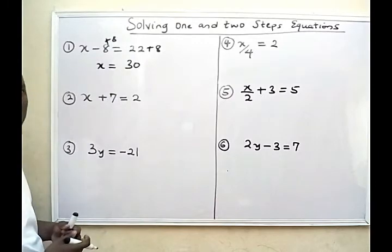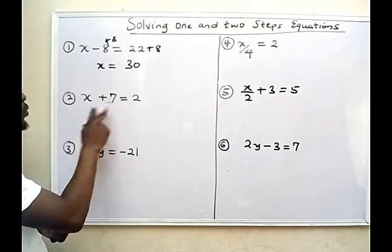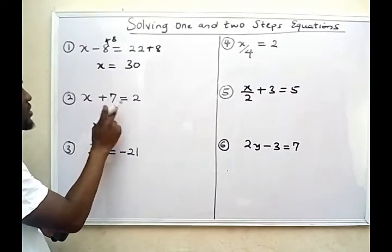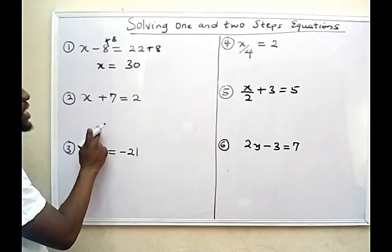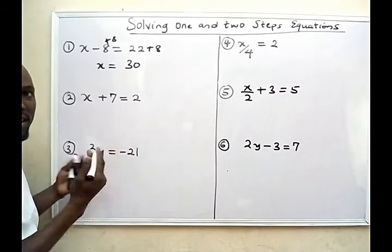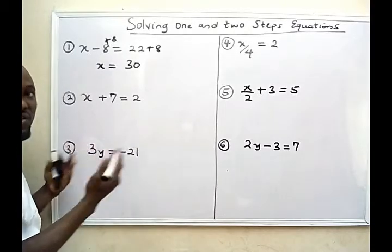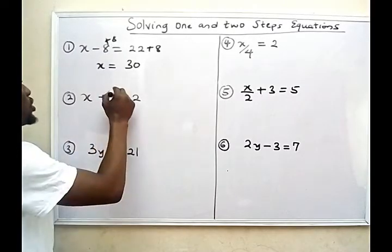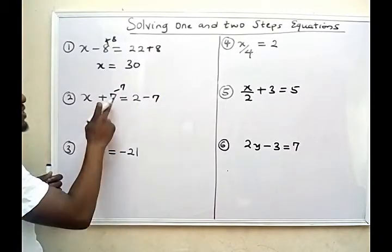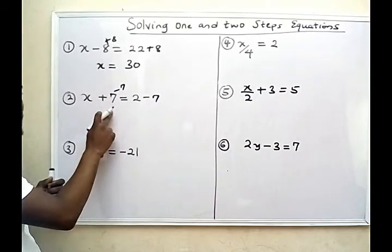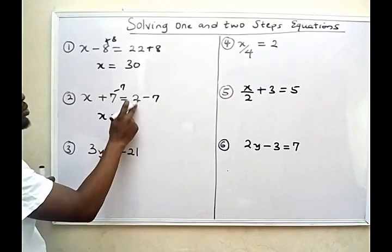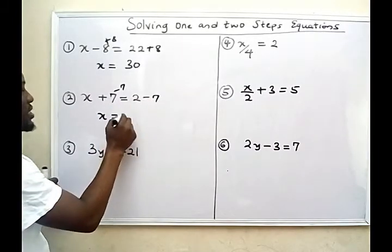Now the next question. I want to find the value of the unknown. I have a plus 7 and I want this to go to the other side of the equation. So I need to strike a balance between the left-hand side and the right-hand side. I'm going to subtract 7 from both sides of the equation — because 7 minus 7 gives me 0. So x will now be 2 minus 7, which gives me negative 5.